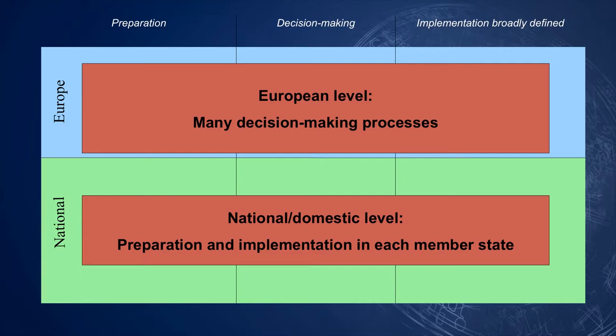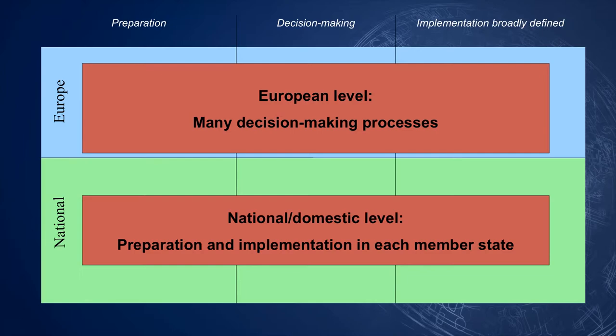But is this indeed the case? To explain this process, we use a simple illustration with two different levels of governance: domestic and European. The blue part represents the European level. The green part represents the domestic level within the member states. In fact, this should be 28 different boxes, or perhaps 27 in the near future, when the UK leaves the EU.